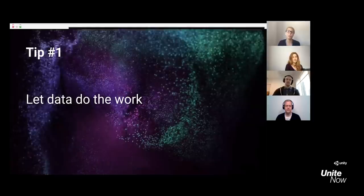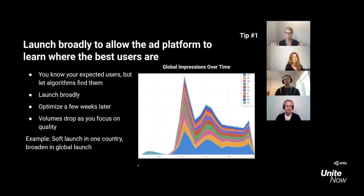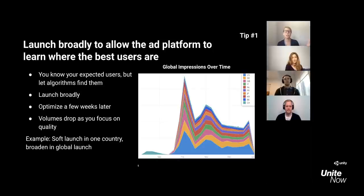Tip number one: let data do the work. When platforms as large as ours reach over 114 million users daily, algorithms must find those users for you — we cannot do much manually. The main point is that when you launch a campaign, you should launch broadly. Don't do any categorization, don't think about demographics or who you expect your players to be. For instance, you might think your game is for males from mid or hardcore games, but some of the best payers may come from casual games. You don't know that, but our machine learning algorithm will potentially find those users.